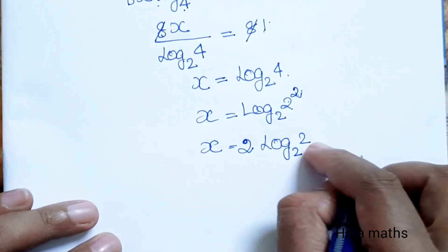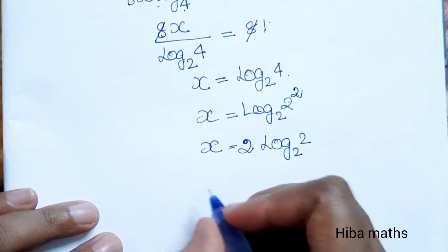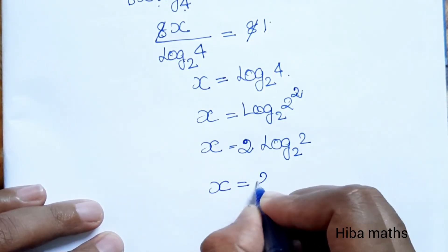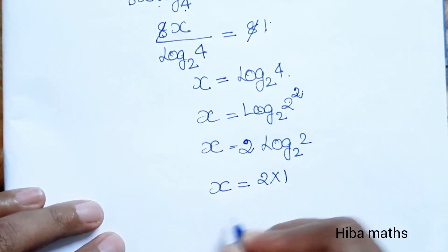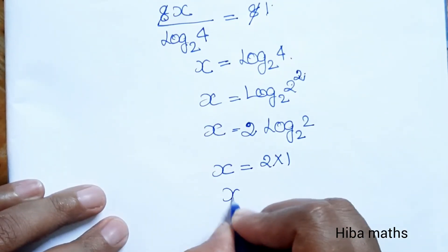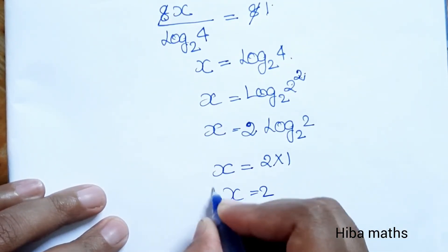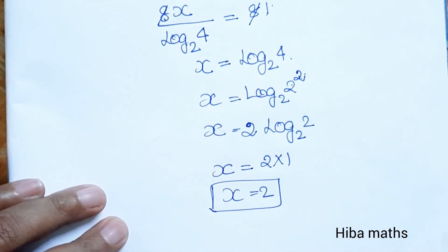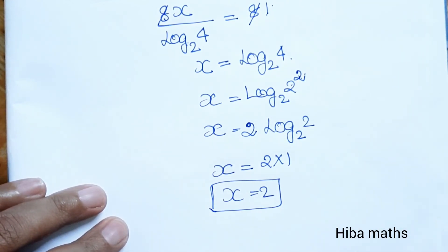Log base 2 of 2 is equal to 2, and log base 2 of 2 value is 1. Already we have 1, therefore x is equal to 2 into 1, so x is equal to 2. This is our answer. Thank you so much for watching.